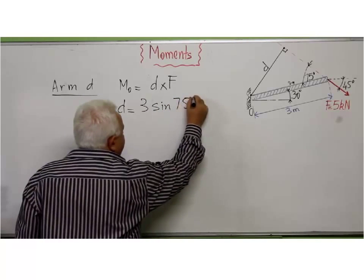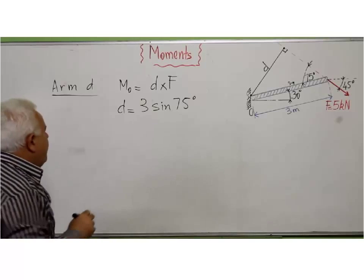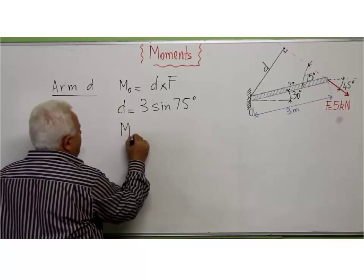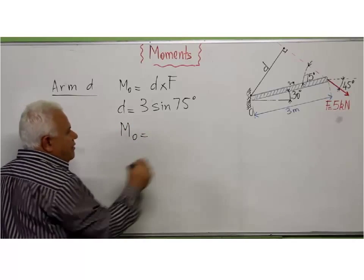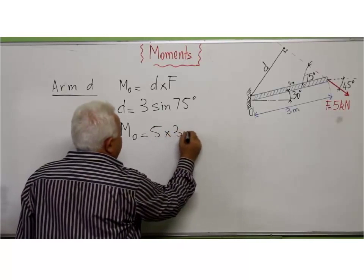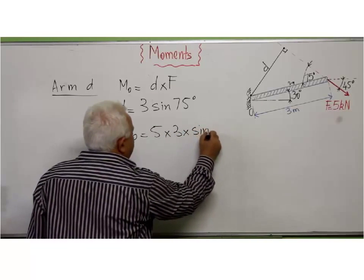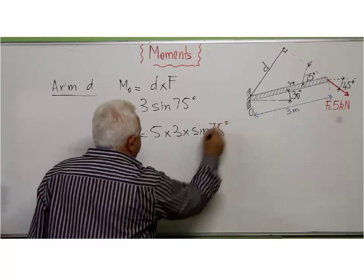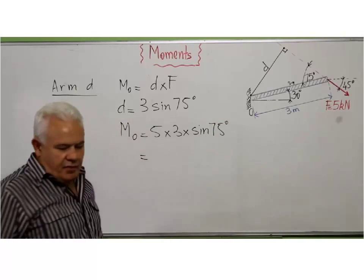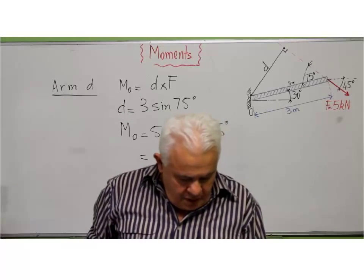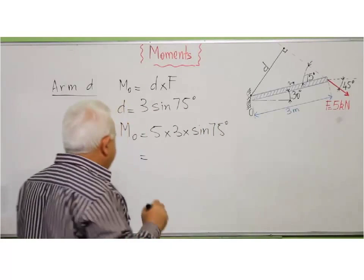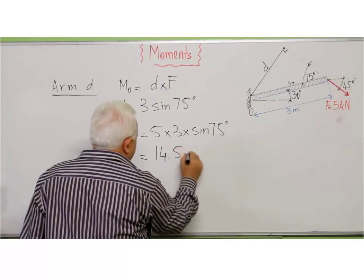Finally, the moment M about O is F, which is 5, times 3 times sin 75 degrees. As I did the calculation, it is 14.5 kilonewton meters.